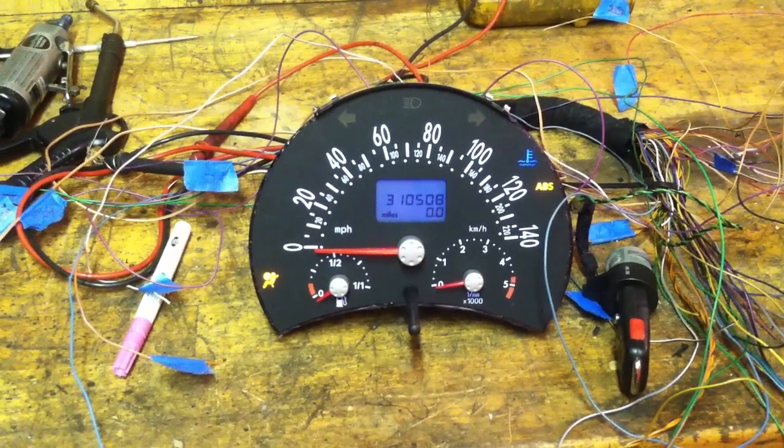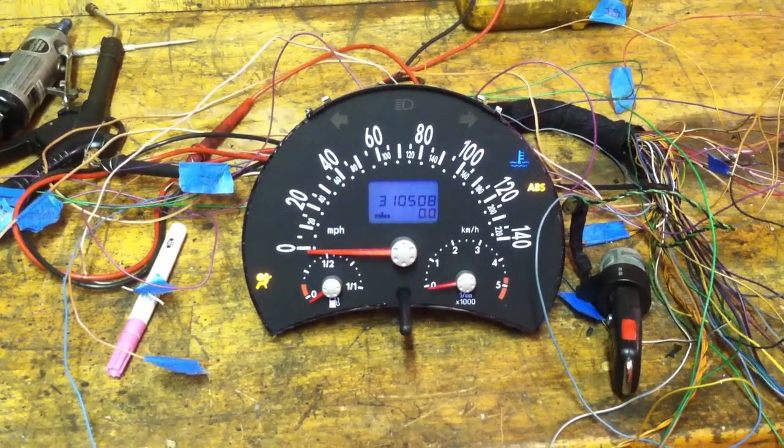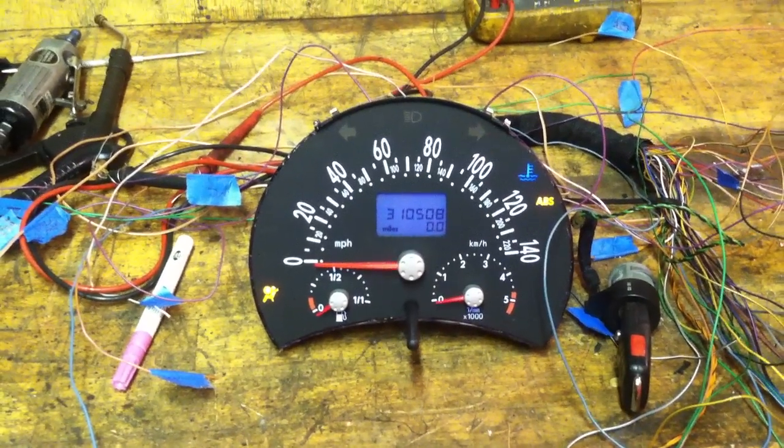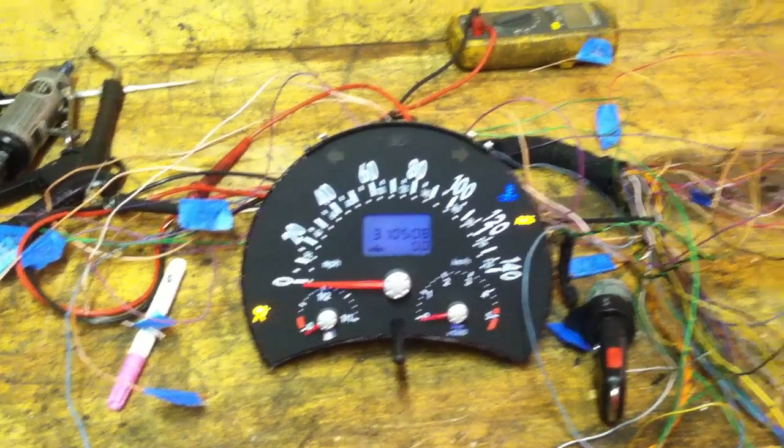I'm doing a TDI ALH donor as a 2001 Beetle auto. Look at them miles. 310,508 thousand. Man this thing runs so good.